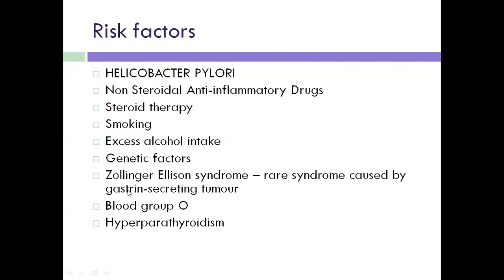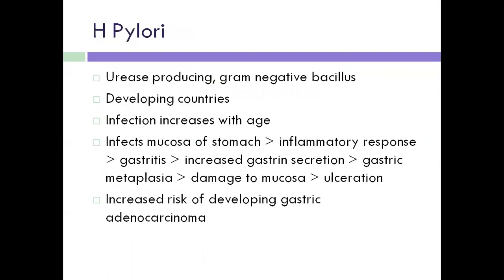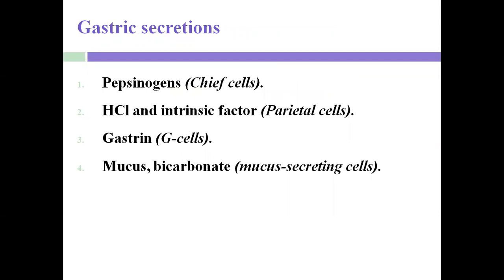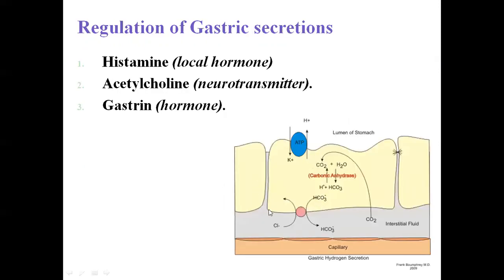A risk factor for gastric ulceration is Zollinger-Ellison syndrome, which is caused by a gastrin-secreting tumor. Here I can explain why gastrin is the important factor for peptic ulceration.